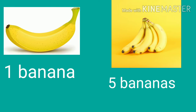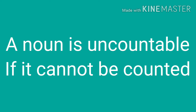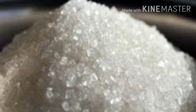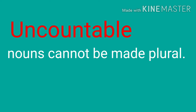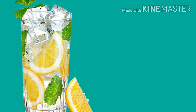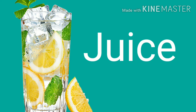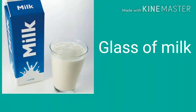A noun is uncountable if it cannot be counted — a little sugar, more sugar. Uncountable nouns cannot be made plural. For example, juice: I like to drink some juice in the morning. I like to drink one glass of milk in the evening.